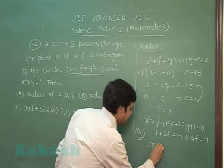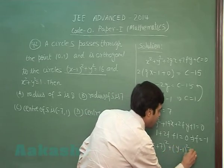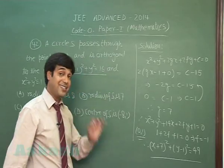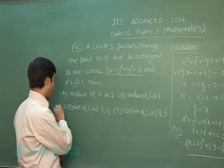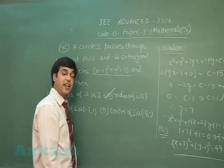So the circle is simply (x+7)² + (y-1)² = 49. Hence the center is (-7,1), means option C is correct, and radius is 7, that is B is correct. So B and C are correct.